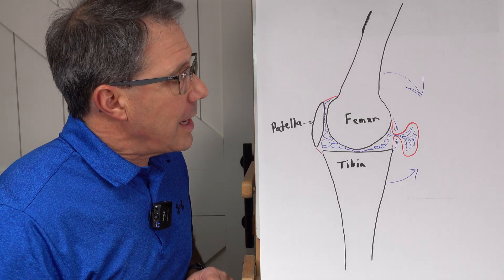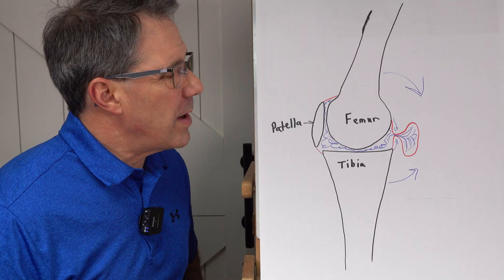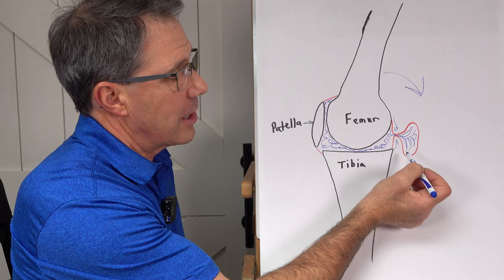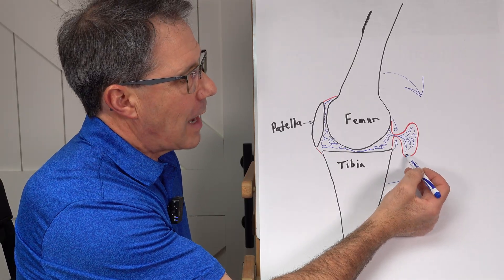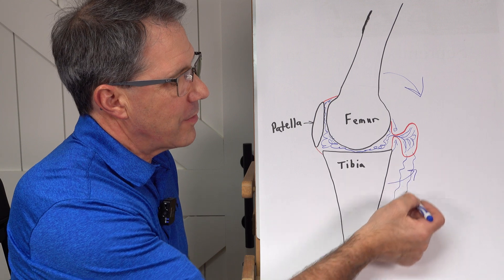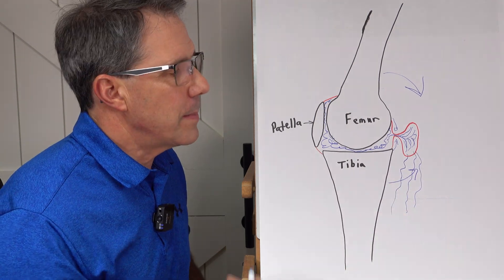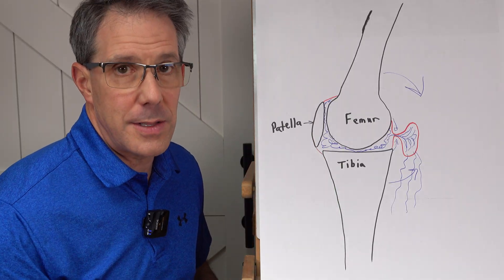So the other thing that can happen, and this happens very seldomly, but something to be concerned about is if this pocket back here just gets bigger and bigger and bigger and suddenly busts, which can happen, that can now start to leak down into the back of the calf muscle and mimic a blood clot back there. So it's important that if this is getting larger, you do seek out medical attention.